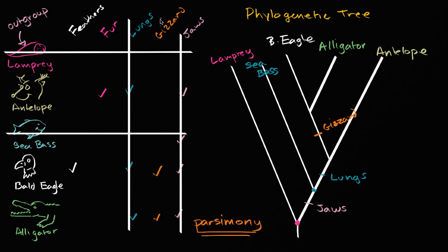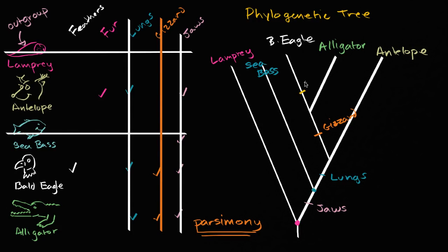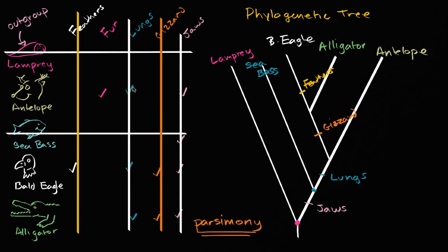We have to account for the feathers — the bald eagle is the only one that has feathers. So at some point you have a common ancestor of the alligator and bald eagle that branches off, and one lineage gets feathers. We know the bald eagle isn't the only species with feathers, but the bald eagle for sure is a species that has feathers. And now we just have to account for the fur of the antelope — we don't know exactly where this happened, but someplace along the antelope's branch we could put the fur.